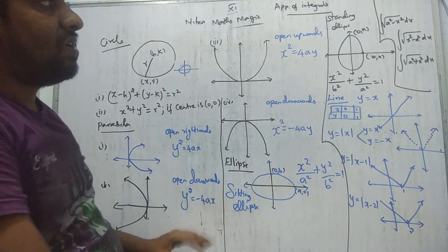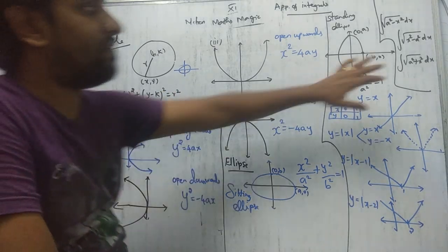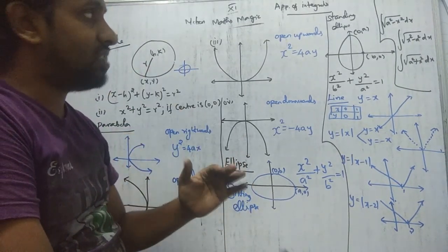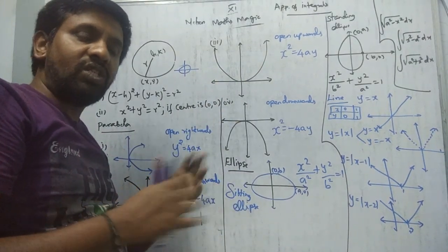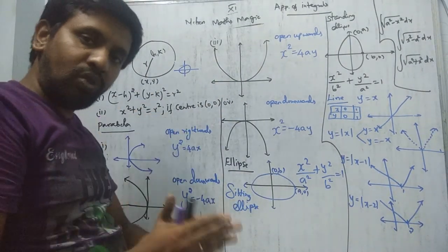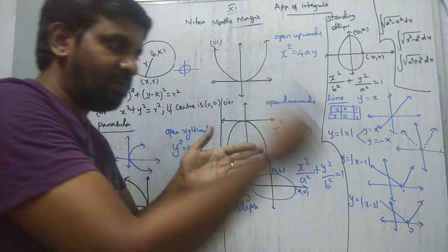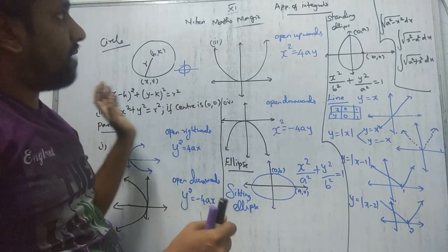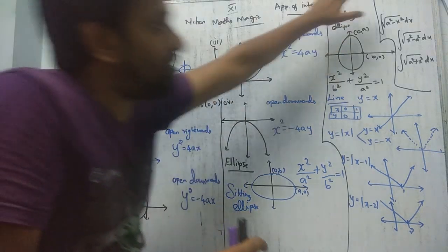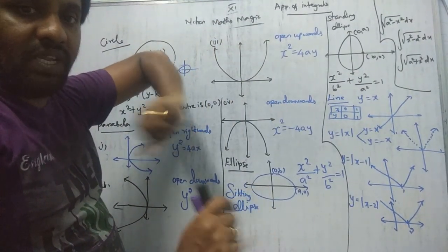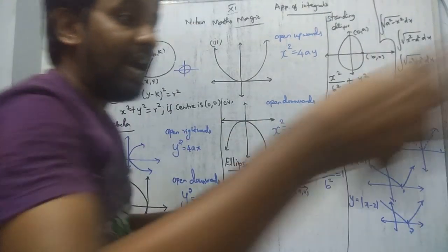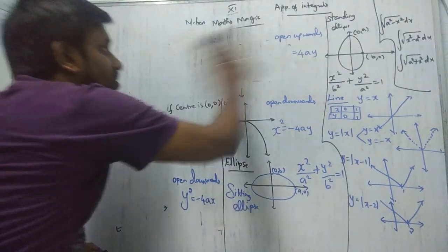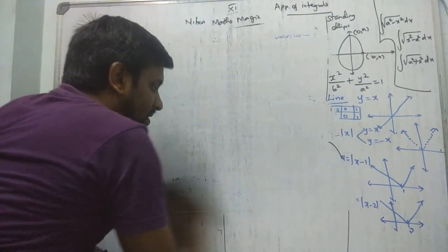This is a very easy chapter. The only thing required is basic definite integration. The starting point and ending point will be given, because this chapter — otherwise called 'Area of a Bounded Region' — must describe a closed, shaded region. The starting and ending points are very important. This chapter is based on definite integration, and these three formulas will play a vital role.